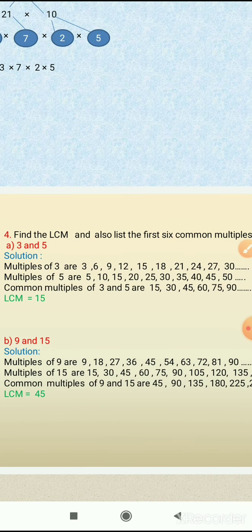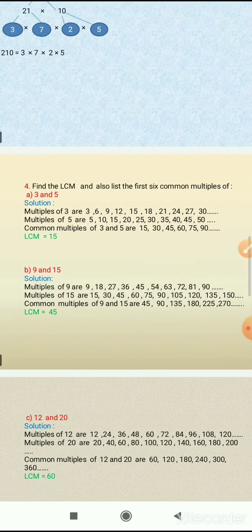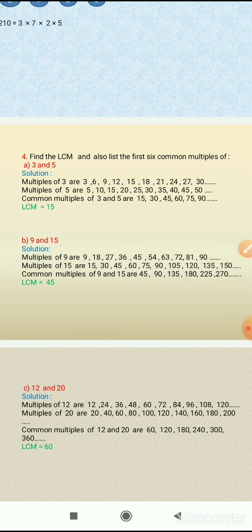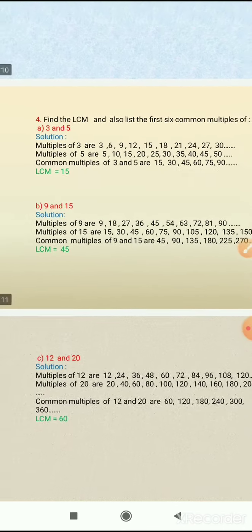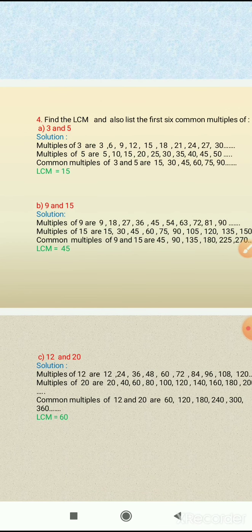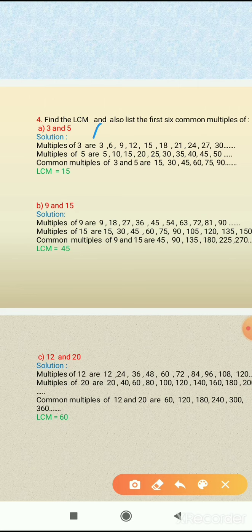Now see question 4: find the LCM and list the 6 common multiples of 3 and 5. We have to first find multiples, then common multiples, then the LCM. Multiples of 3 are found by multiplying 3 by 1, 2, 3, 4, 5, 6, 7, 8, 9, 10 and so on. So the multiples of 3 are: 3, 6, 9, 12, 15, 18, 21, 24, 27, and 30.